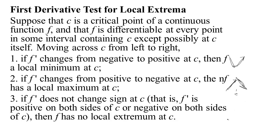If the derivative doesn't change signs — maybe going up, then level, then up again, or going down, then having that critical point, then going down again — then f doesn't have an extreme point at c. Basically we're using the derivative on either side of the critical point to figure out if the critical point is a min, a max, or neither.